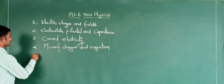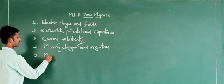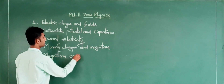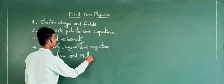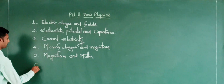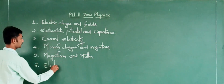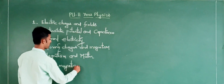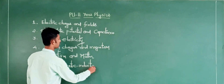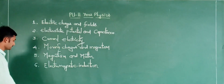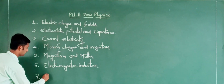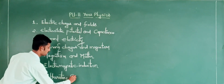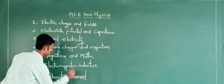Topic number five is magnetism and matter. Topic number six is electromagnetic induction. Topic number seven is alternating current.